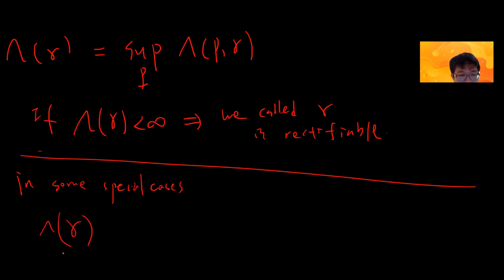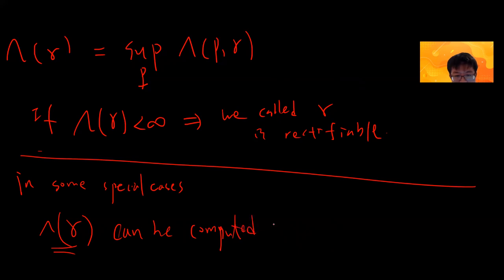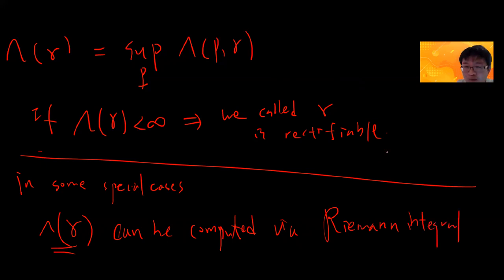In some special cases, lambda of gamma — the length of the curve — can be computed by a Riemann integral. This is the first rigorous proof of what the length of a curve actually is.